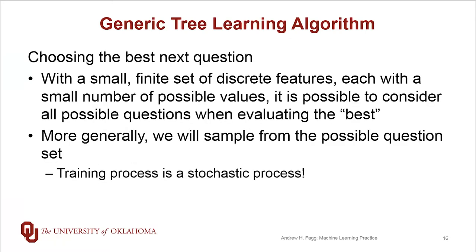How we choose that next best question really varies depending upon the kind of tree that we're working with. In cases where we have a small finite set of features to work with, and each of those is an enumerated type for which there are a small number of values, that it is actually possible to consider all possible questions when we're evaluating the best one. More generally, that set of possibilities is very large. And in fact, it can be infinitely large for starting to ask questions about continuous variables. And in this situation, we actually end up sampling from the possible question set.